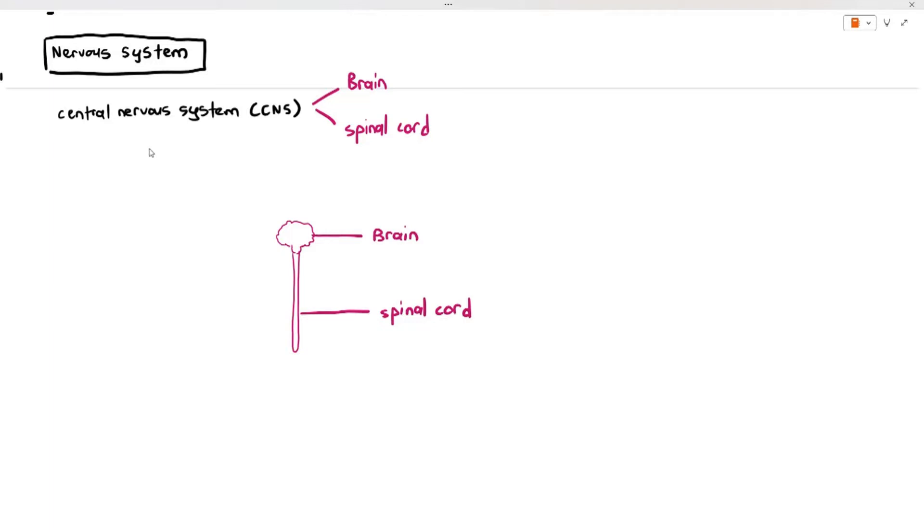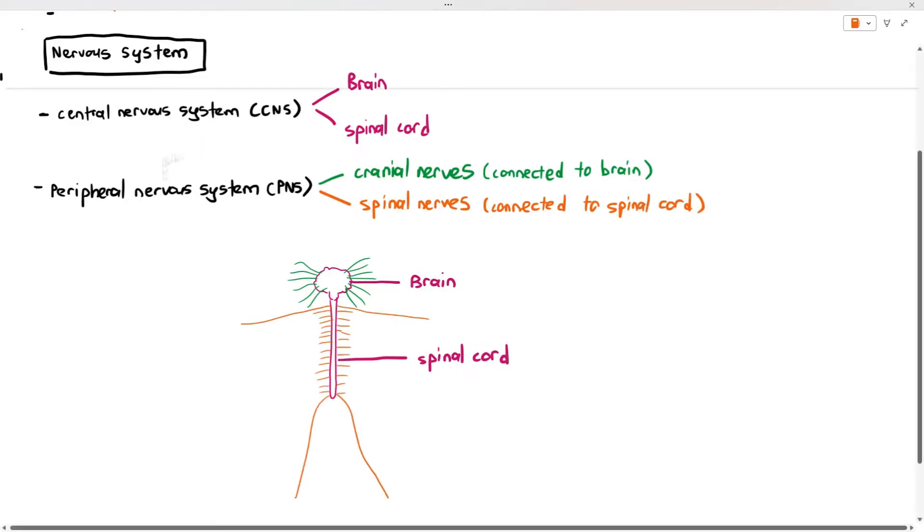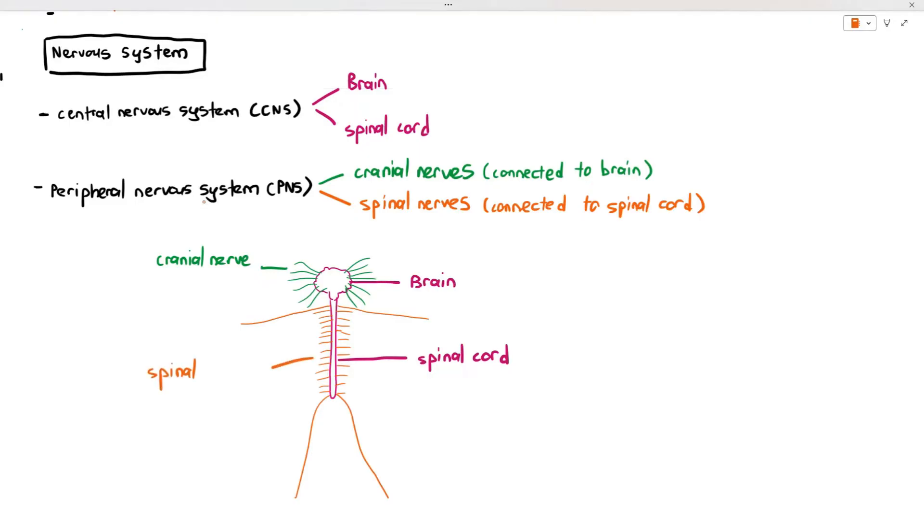Number two, we also have something called the peripheral nervous system. The peripheral nervous system is made out of cranial nerves, which are just nerves, or you can think of them as wires, which are connected to the brain, which I've represented in green. It looks like an alien, by the way. And the spinal nerves, which are connected to your spinal cord.